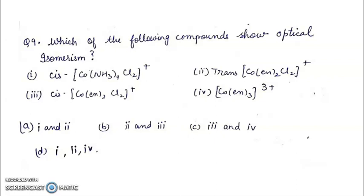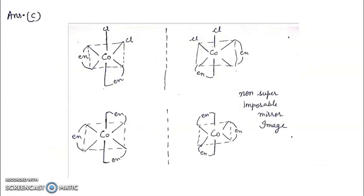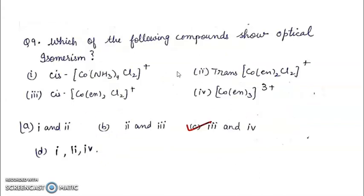So, coming to the solution of this question, answer is C, that is 3 and 4. We can draw the structure of 3 and 4 compounds. Non-superimposable mirror images are obtained for both of these. That's why they are optically active. Trans-Co(en)2Cl2 and cis-Co(NH3)4Cl2 are inactive because they produce superimposable mirror image. MA4B2 type of compounds will not show optical isomerism. That's why our answer will be 3 and 4.